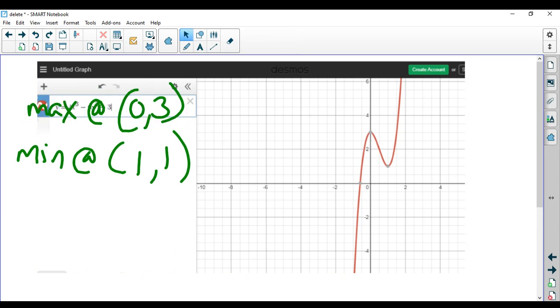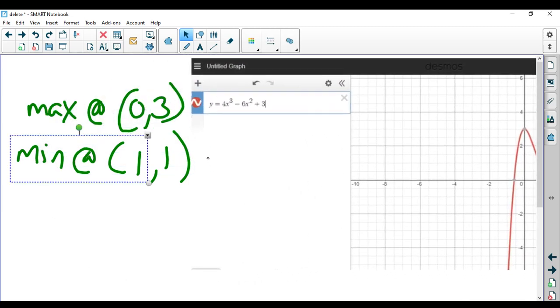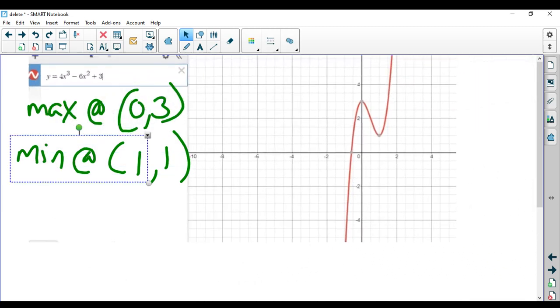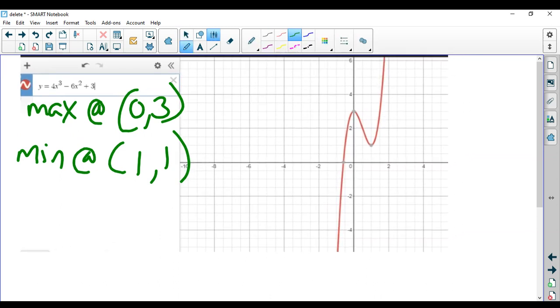I plugged the original function into Desmos. And if you can see here, that's a maximum at (0, 3). And it looks like we have a minimum here at (1, 1). So it worked. That's easy.